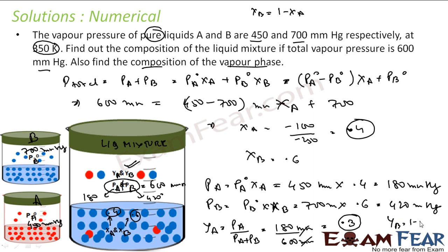So YA = 0.3 and YB = 1 − 0.3 = 0.7. Notice that the mole fraction of A was 0.4 in the liquid phase but only 0.3 in the vapor phase, while B went from 0.6 to 0.7 — meaning B is more volatile. In summary: find mole fractions in liquid phase, then partial pressures, then mole fractions in vapor phase.